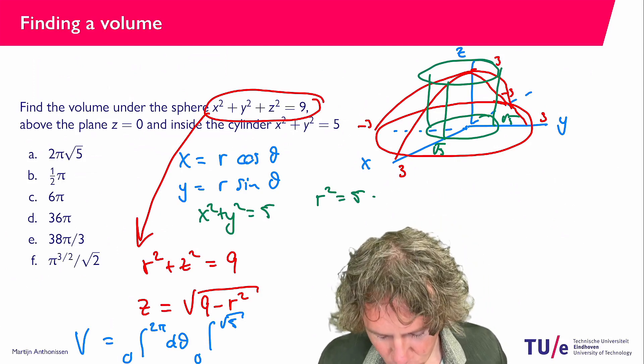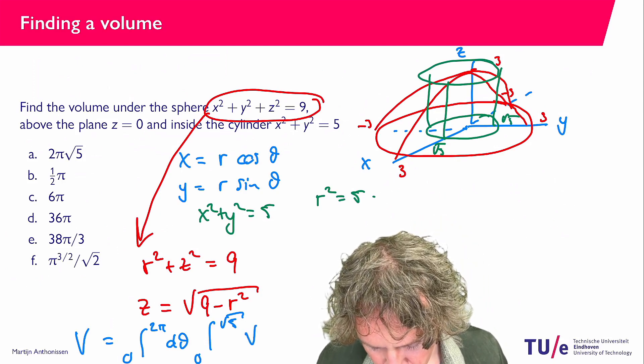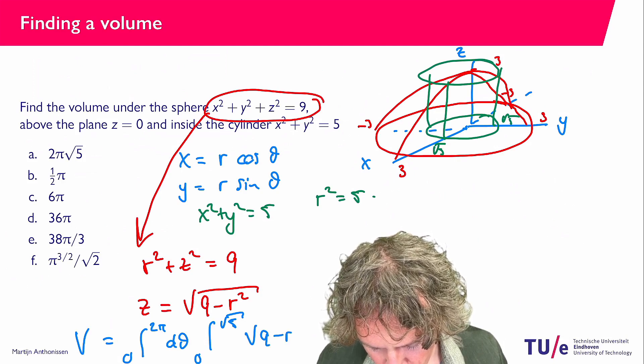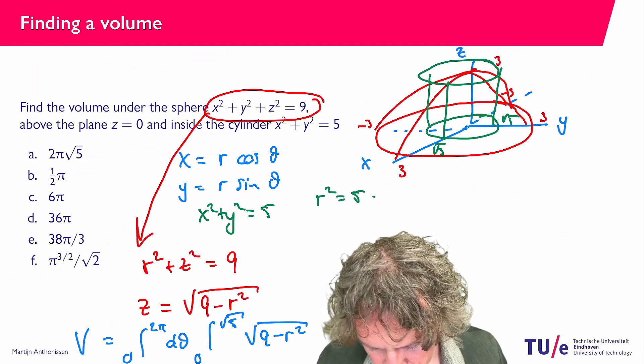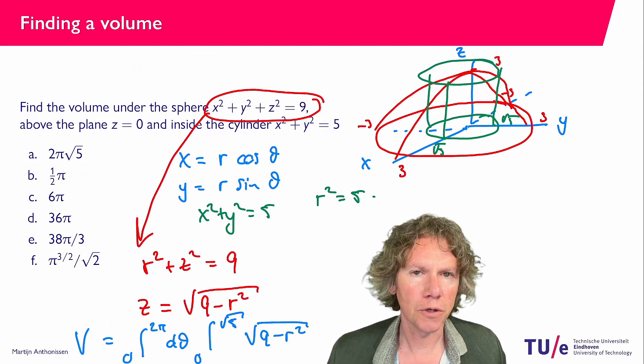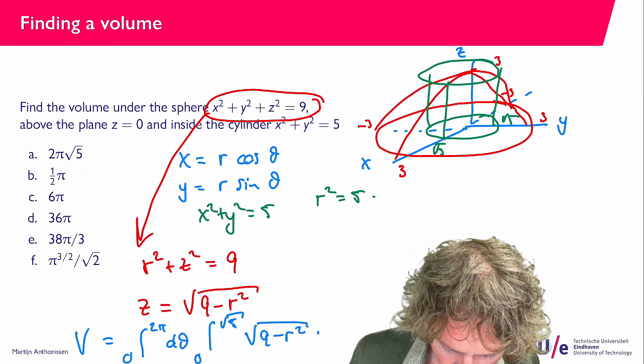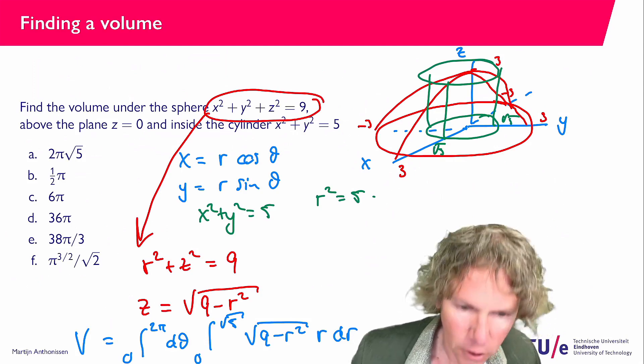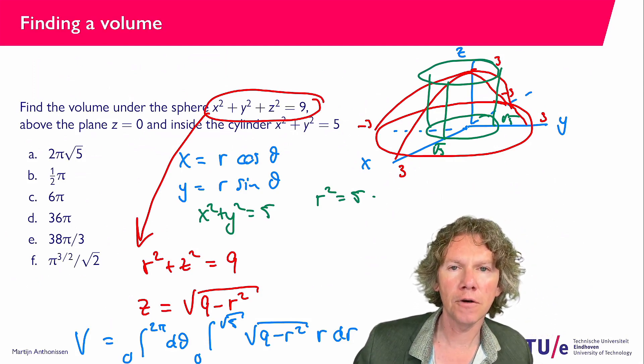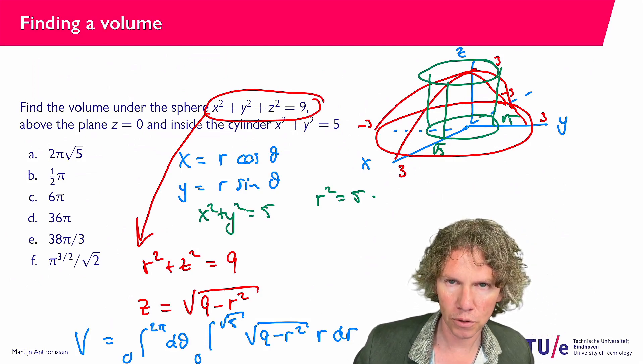And then the function we need to integrate is the square root of 9 minus r squared. And then you should realize that because we work in polar coordinates we get r d r. So the extra r that we have here is due to the polar coordinates.